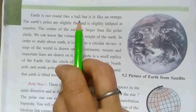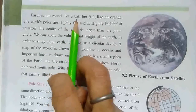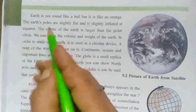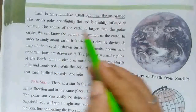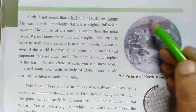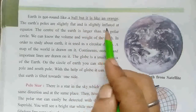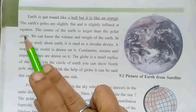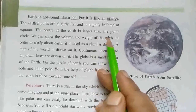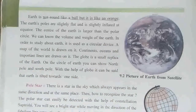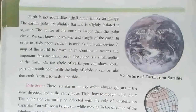Earth is not perfectly round like a ball, but it is like an orange. The equator is inflated. The center of the Earth is larger than the polar circle. The center area is larger, while the polar circle is smaller on the sides.